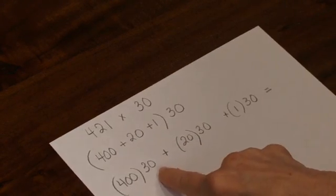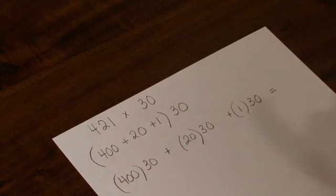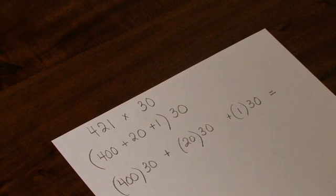400 taken 30 times. Let's picture 400 squares, 400 squares, taken 10 times. That would be 4,000.